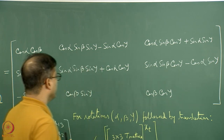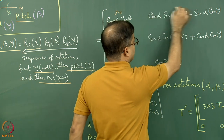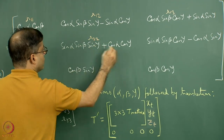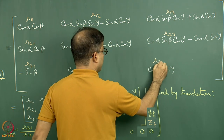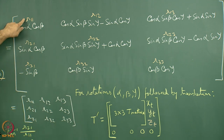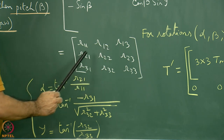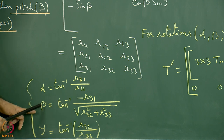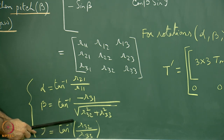This large combined matrix can be simplified by labeling each element: r11, r12, r13 / r21, r22, r23 / r31, r32, r33—using small r because this is a rotation matrix. The matrix simplifies to the 3×3 rij notation. The individual rotation angles can be recovered: alpha = tan⁻¹(r21/r11), beta = tan⁻¹(-r31 / sqrt(r32² + r33²)), and gamma = tan⁻¹(r32/r33).